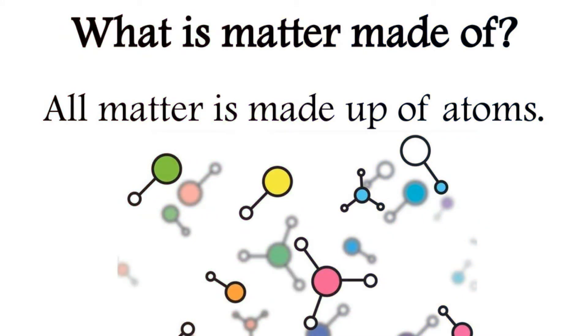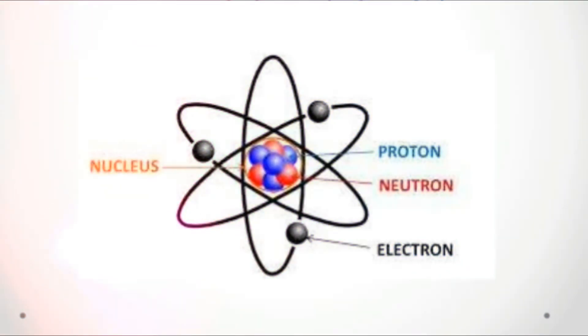An atom has a center called a nucleus which contains particles called protons and neutrons. Outside the nucleus but still inside the atom are particles called electrons.